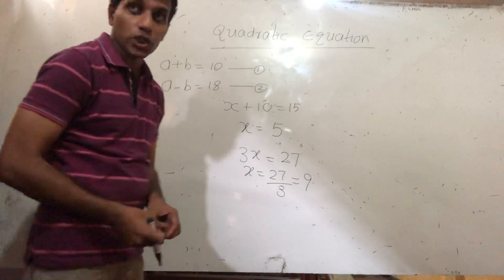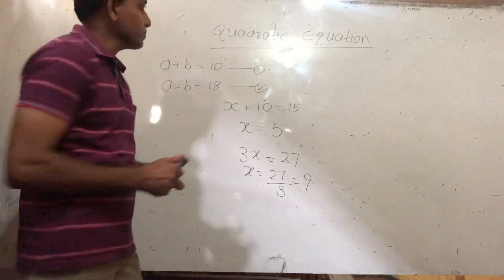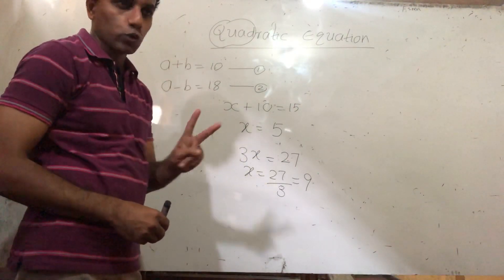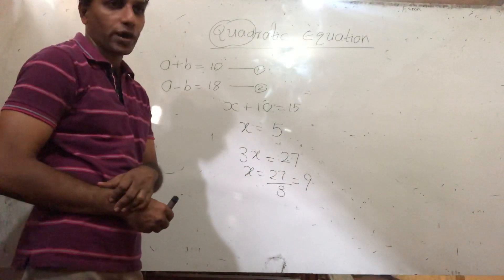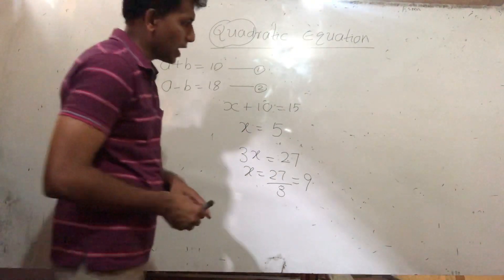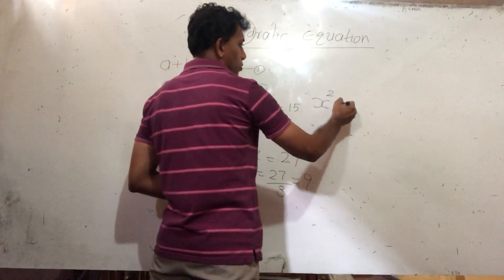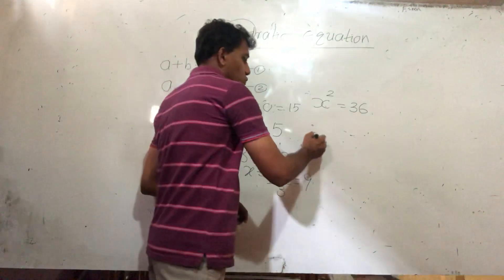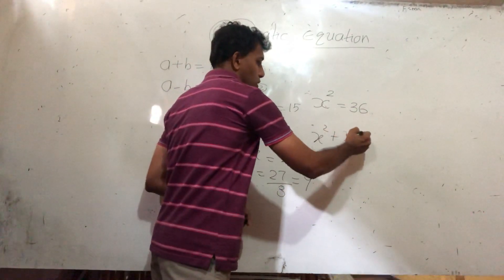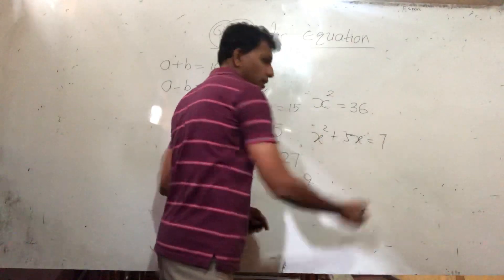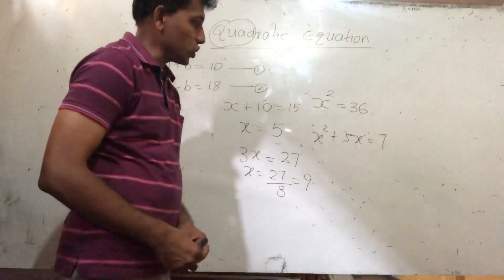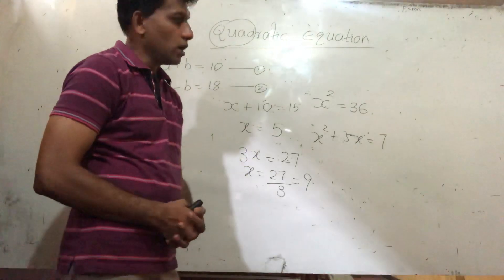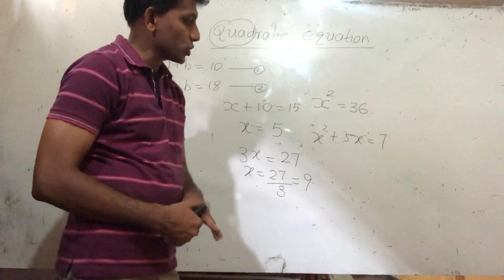We'll see what 'quadratic' means. 'Quad' is a Latin word meaning two — two answers come in a quadratic equation. Usually these equations are in the form x squared, for example x squared equals 36, or x squared plus 5x equals 7. These are quadratic equations. We'll look at the basic ideas of quadratic equations and how to solve them.